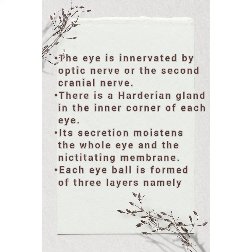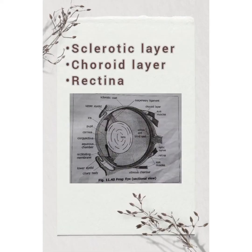There is a harderian gland in the inner corner of each eye. Its secretion moistens the whole eye and the nictitating membrane. Each eyeball is formed of three layers: namely the sclerotic layer, choroid layer, and retina.